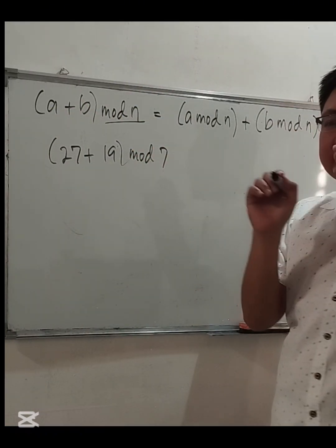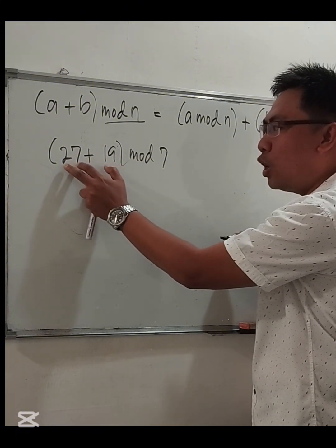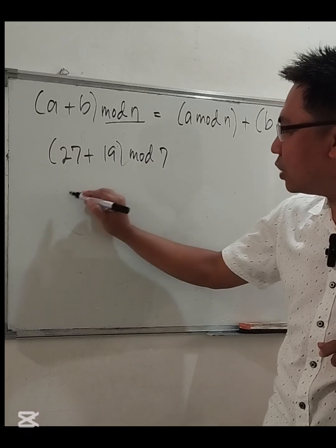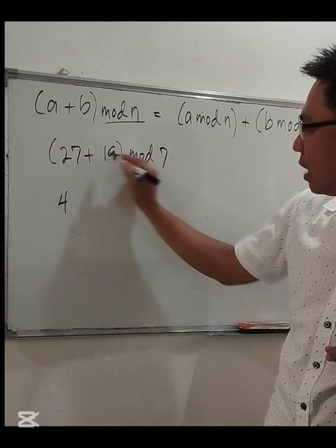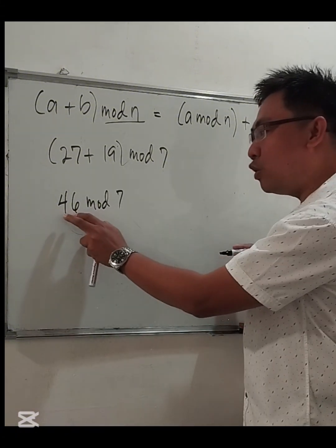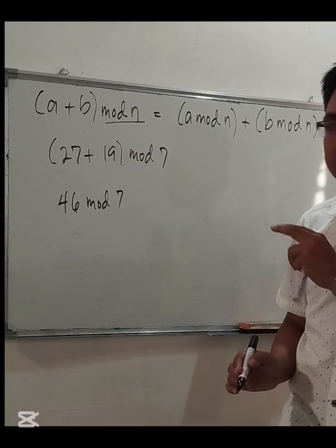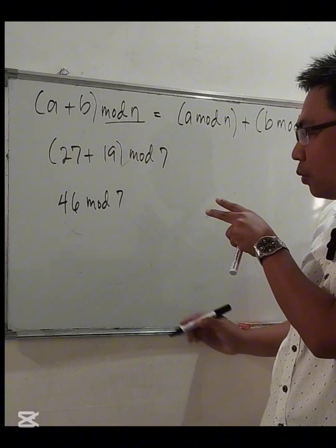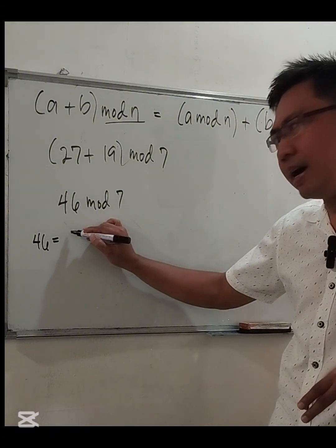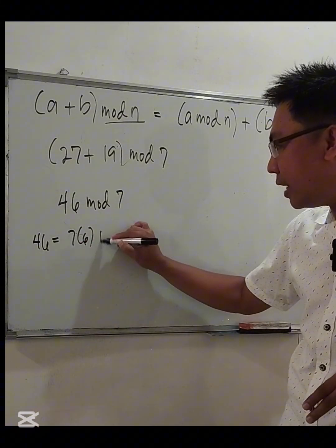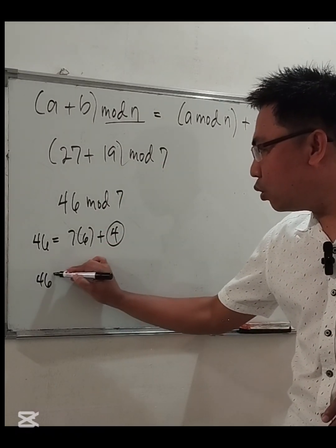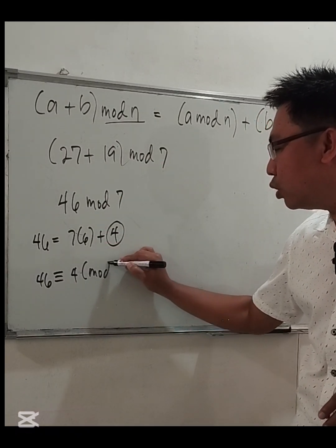Let's verify with example (27 + 19) mod 7. First, 27 + 19 = 46. So we compute 46 mod 7. Since 46 = 7 × 6 + 4 (because 7 × 6 = 42), the remainder is 4. Therefore, 46 is congruent to 4 modulo 7.